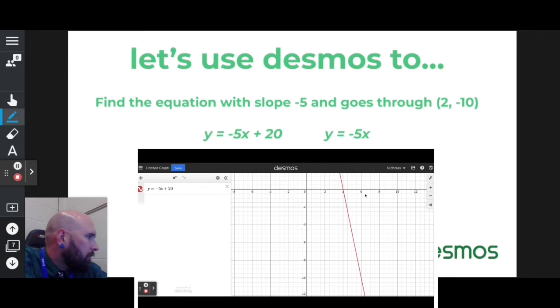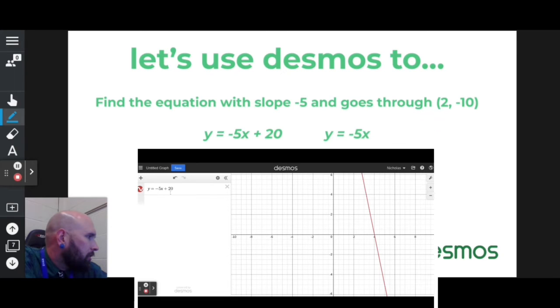So let's try the other one just to make sure. Let's hit the home button to get my original picture. Let's get rid of that plus 20 and have just negative 5x.